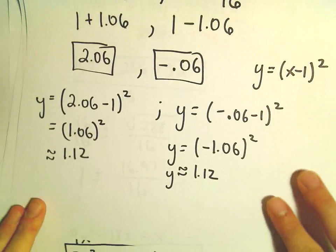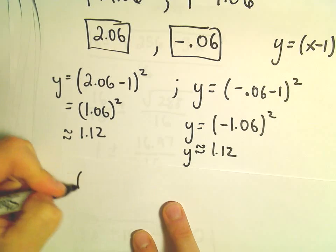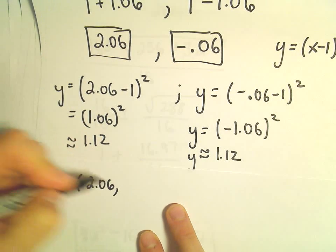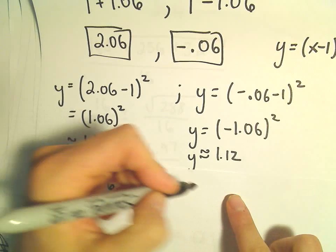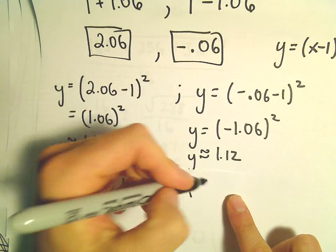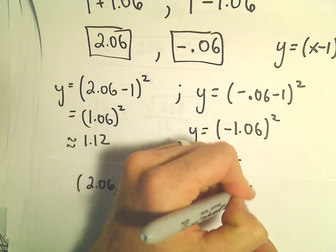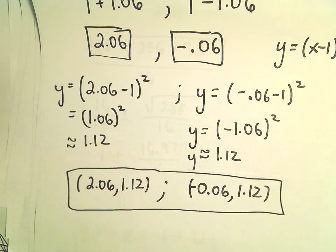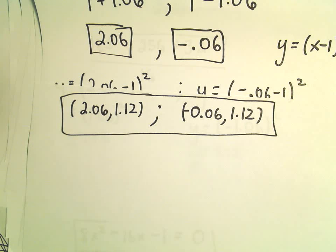So now we've figured out our points of intersection. There's going to be a point of intersection at 2.06. That was the x-coordinate. And then we found the y-coordinate to be 1.12. And then the other point of intersection will be at negative 0.06 comma 1.12. So, again, basic idea, just eliminate the parameters, set them equal.